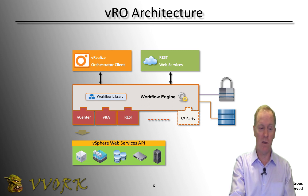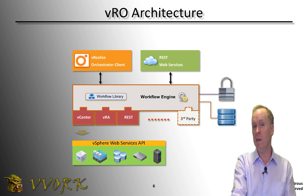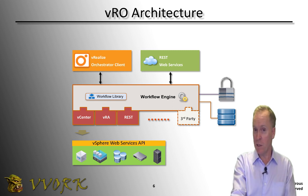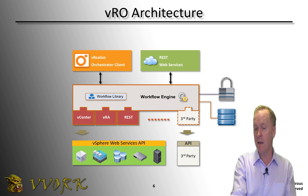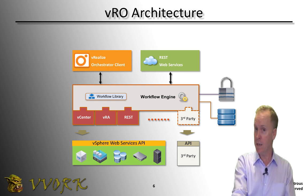One of the numerous third-party plugins available for Orchestrator allows Orchestrator to communicate with your Infoblox IP address management system. These third-party plugins are not limited to just Infoblox — there are third-party plugins for all sorts of things, and those plugins generally go out using whatever sort of API the third-party system provides to enable you to create Orchestrator workflows that can automate those third-party products.